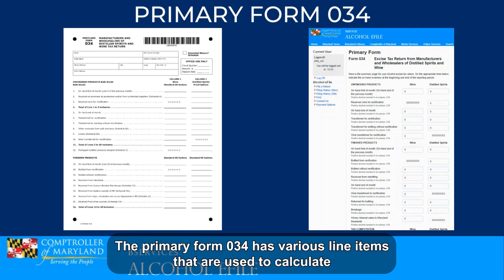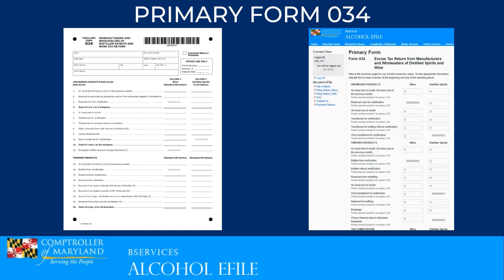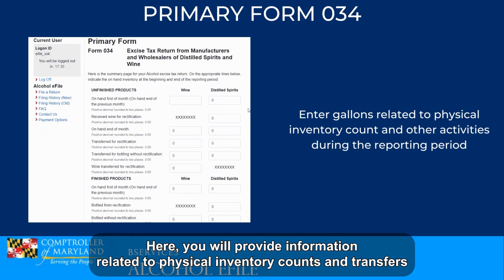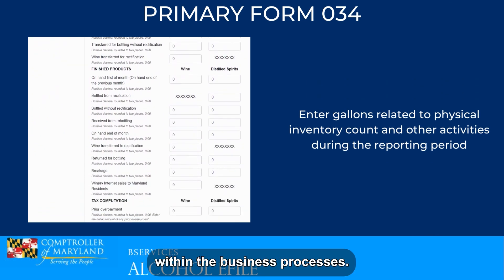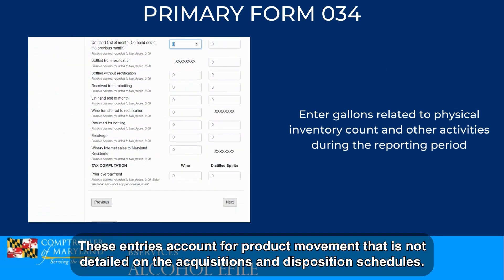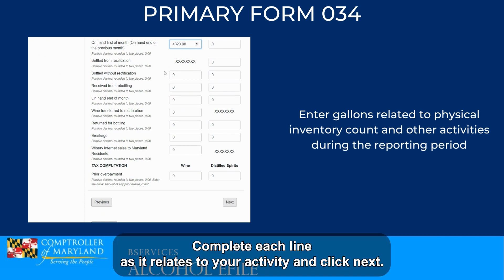The primary form 034 has various line items used to calculate the total gallons of alcoholic beverage product activity for the licensee during the reporting period. Here you will provide information related to physical inventory counts and transfers within the business processes. These entries account for product movement that is not detailed on the acquisitions and disposition schedules. Complete each line as it relates to your activity and click Next.